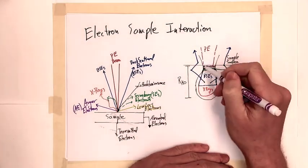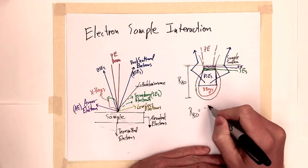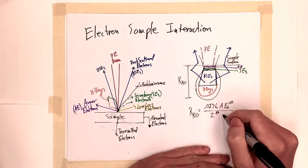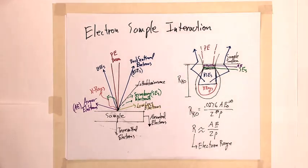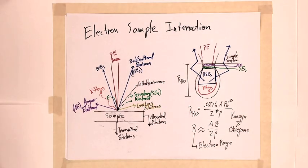Backscattered electrons tend to lose more energy as they propagate further into the sample. So the maximum usable information depth of backscattered electrons is often on the order of half of the total electron range.